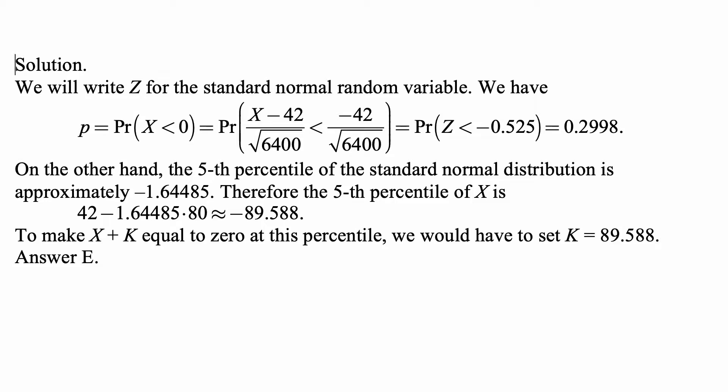We basically subtract 42 and divide by square root of 6400 on both sides of the inequality X less than 0 to get this.